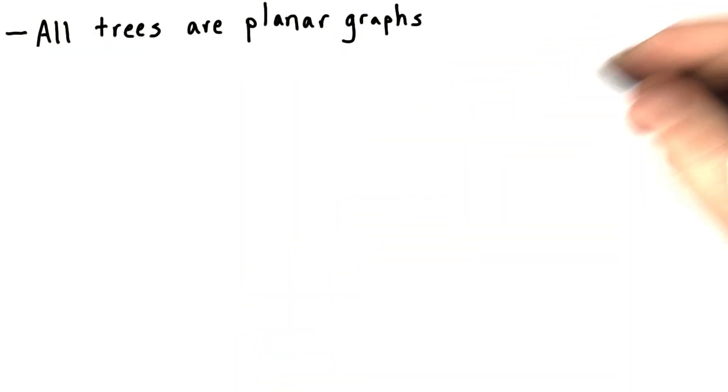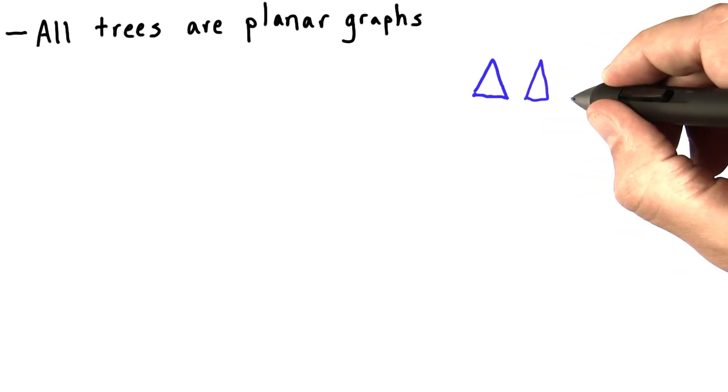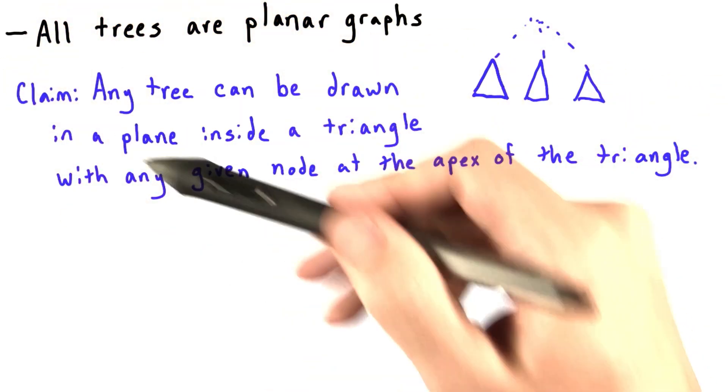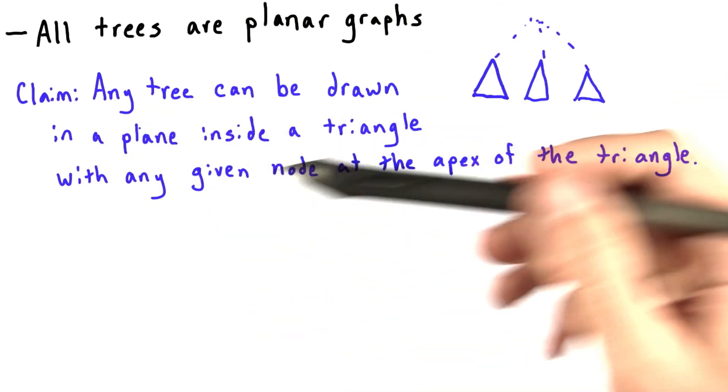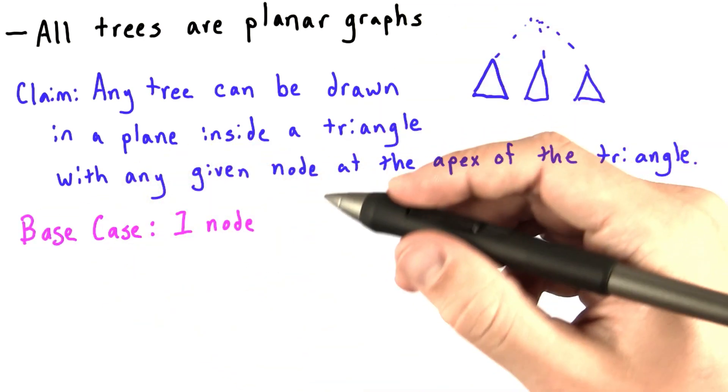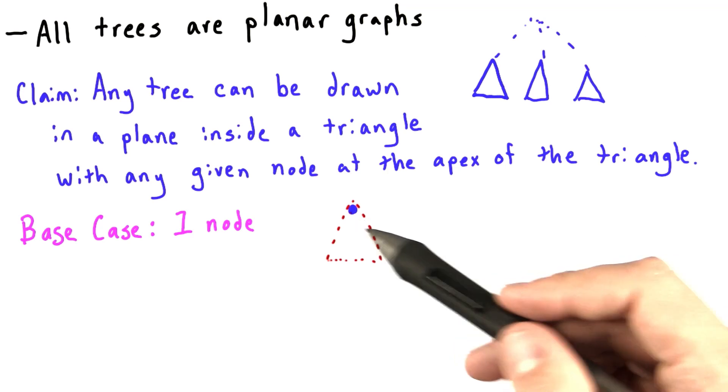One way to prove this is to show that any tree can be drawn inside of a triangle. And then larger trees can be constructed by combining these triangles. More formally, what we want to show is that any tree can be drawn in a plane inside a triangle with any given node at the apex of the triangle. And so for the base case of one node, we can draw the node at the apex of the triangle. And this is trivially in a plane.